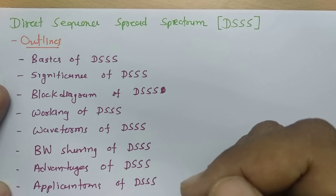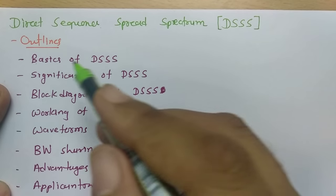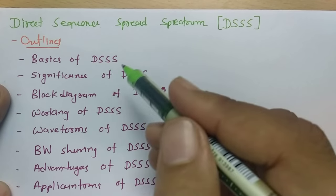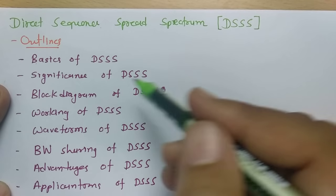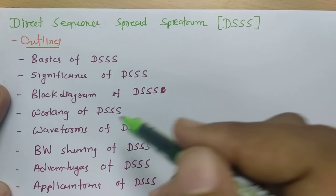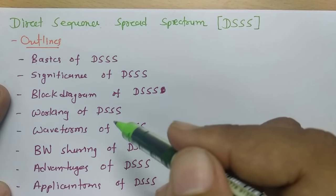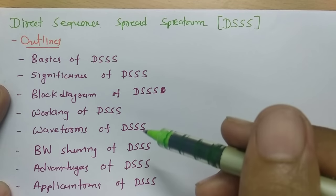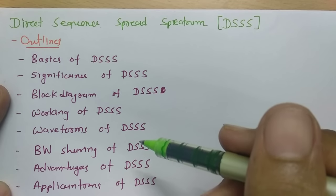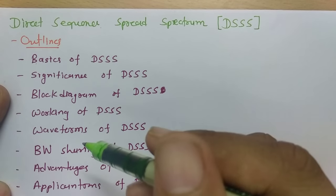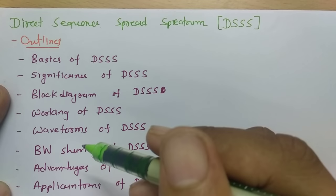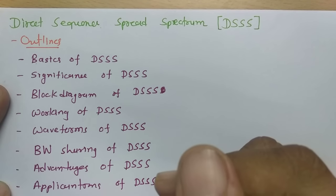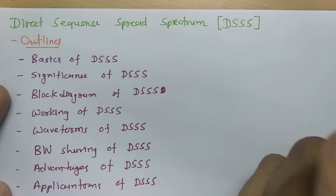These are my session outlines: first I will explain the Basics of DSSS, then its Significance, Block Diagram, how it works, and by Waveforms I will explain how it generates a signal. Then we will discuss Bandwidth Sharing of DSSS, and finally Advantages and Applications of DSSS.